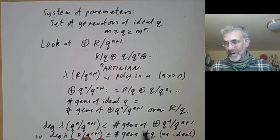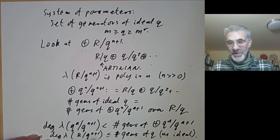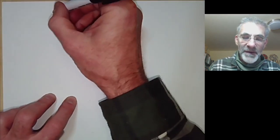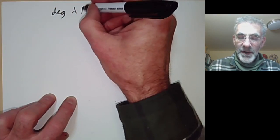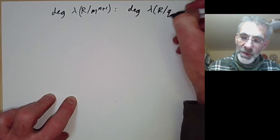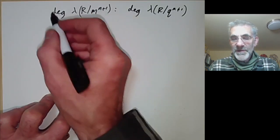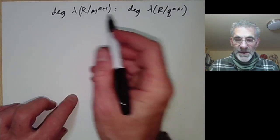So the cardinality of a system of parameters bounds this Hilbert polynomial degree. The only problem is this isn't quite the Hilbert polynomial we use to define the dimension of the ring, so we need to compare these two Hilbert polynomials. We define the dimension of the ring as the degree of the Hilbert polynomial where we take lambda of R over M to the n plus 1, and we want to compare this with the degree of the polynomial lambda of R over q to the n plus 1.